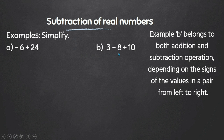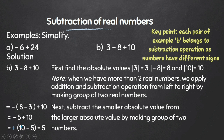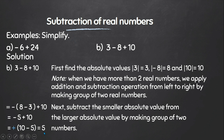In example B, there are more than two terms. To simplify such an expression, we first make pairs of two terms from left to right and apply the operation according to the given sign. The result of the first pair is then paired with the next term, and the process continues to the end. We find the absolute values, apply the sign of the larger absolute value, and subtract. The result of the first pair is minus 5. Making another pair with the next term, plus 10 has a larger absolute value than minus 5, so we apply the positive sign and find the final result is plus 5.